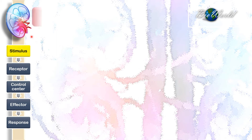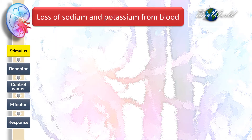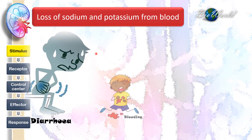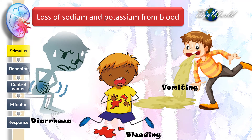The stimulus is related to the loss of both sodium and potassium from our blood. This can occur during diarrhea, bleeding, or even vomiting. When we bleed, there is loss of blood which directly relates to the loss of sodium and potassium. When we are having diarrhea or vomiting, there is no loss of blood, but the sodium and potassium is released with the diarrhea as well as with the vomit.